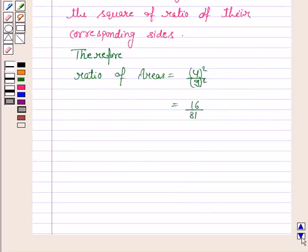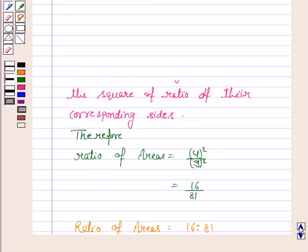So, the ratio of the areas is equal to 16 is to 81. Hence, the correct option is option D.